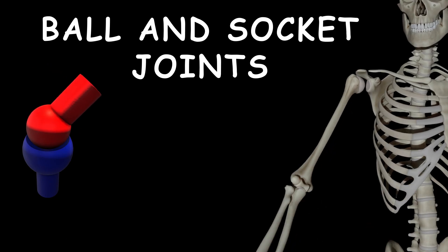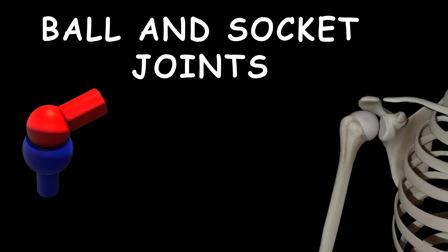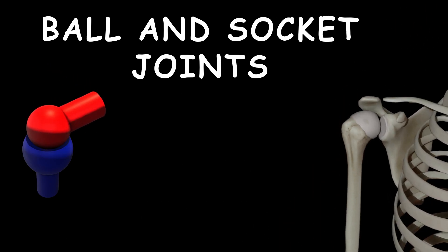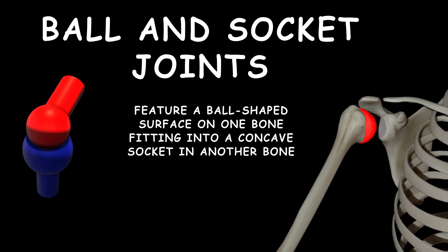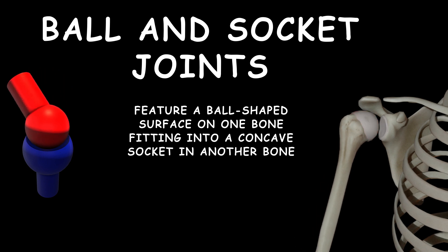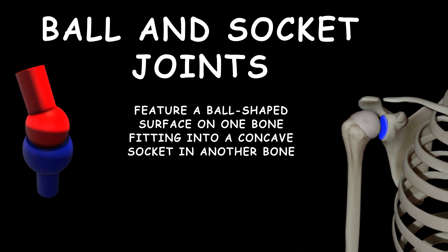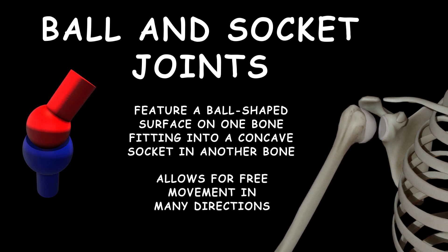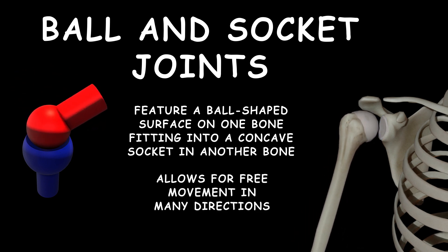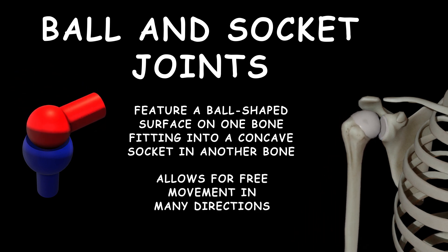Finally, ball and socket joints, such as the shoulder joint, feature a ball-shaped surface on one bone fitting into a concave socket in another bone, allowing for free movement in many directions.